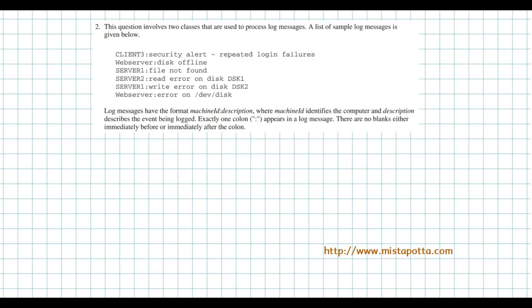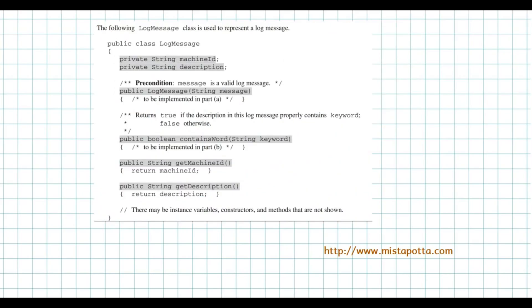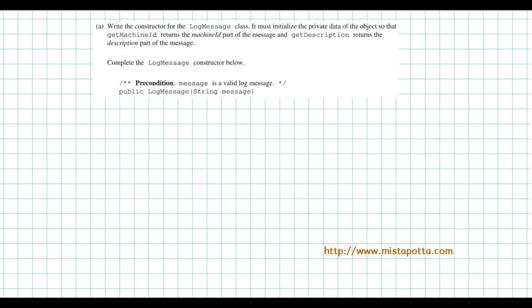On question 2, it says this question involves two classes that are used to process log messages. A list of sample log messages is given below. Notice that all log messages are going to have some machine followed by a colon and then some error message, and we're going to have to break this up. We'll need to write a constructor that, given a message, fills in the machine ID and the description. The purpose of a constructor is to initialize these variables.